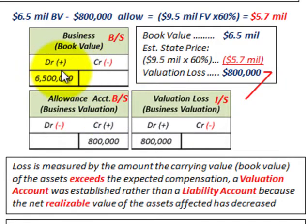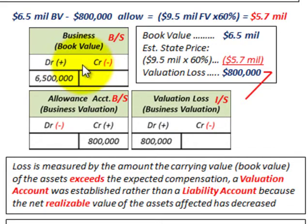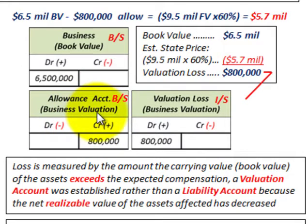Would it actually happen that the state pays less than the fair value? Probably in most cases they'll pay up to the fair value, but this is just being used as an example in case you run into a problem like this. That takes care of our loss contingency using an allowance or a valuation account.